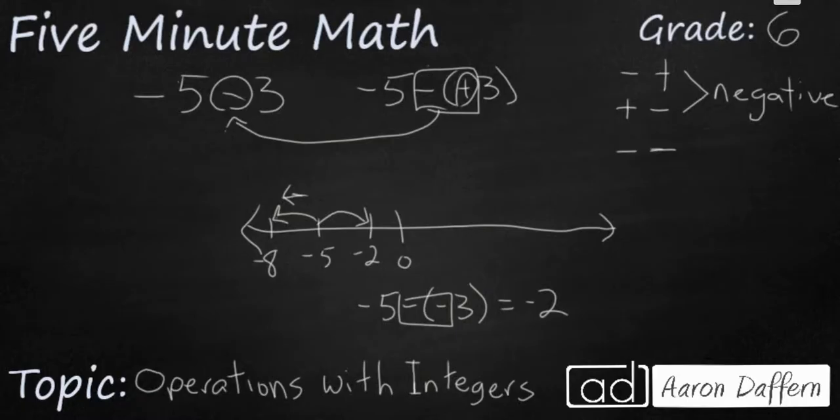And so whenever you have two signs that are next to each other that are the same, whether it be negative negative, or whether it be a positive and positive, those always end up as a positive. And the same thing works for multiplication and division.